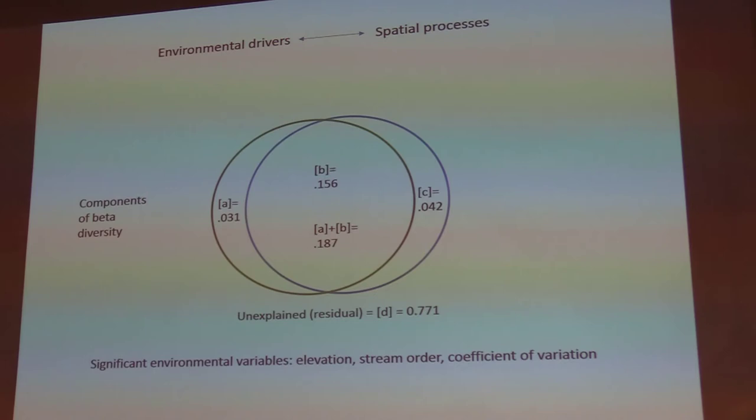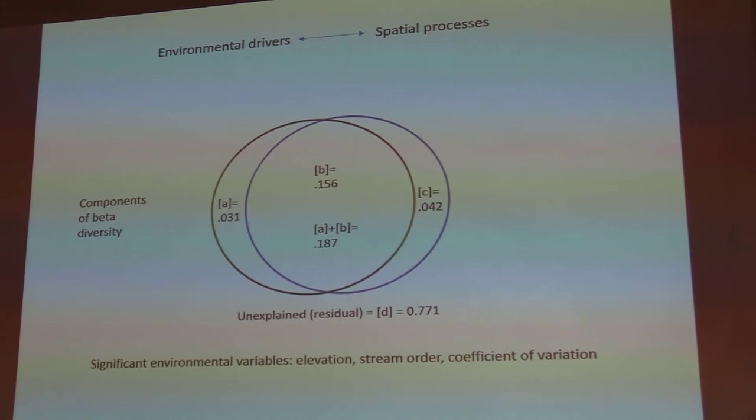We're not explaining a large proportion of variation in the catchment with this procedure, but this was done using a taxonomic method — not using traits — and this is actually fairly typical for this kind of analysis. The significant environmental variables we found were elevation, stream order, and coefficient of flow variation.